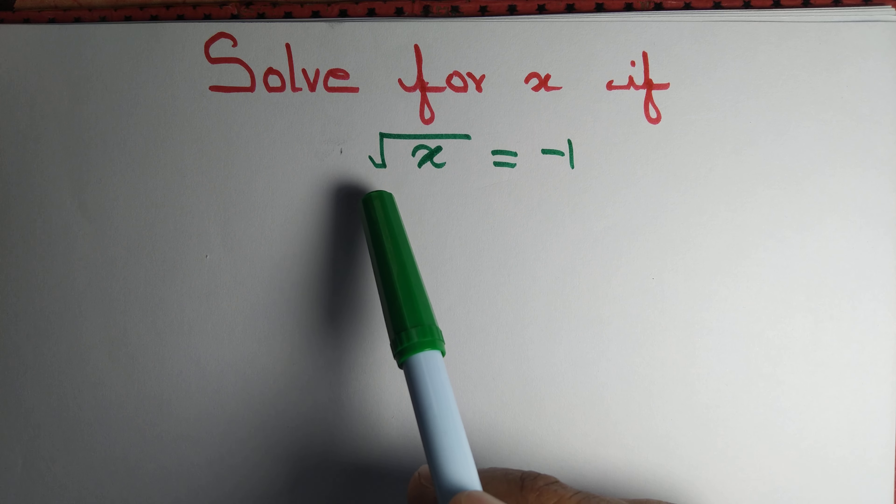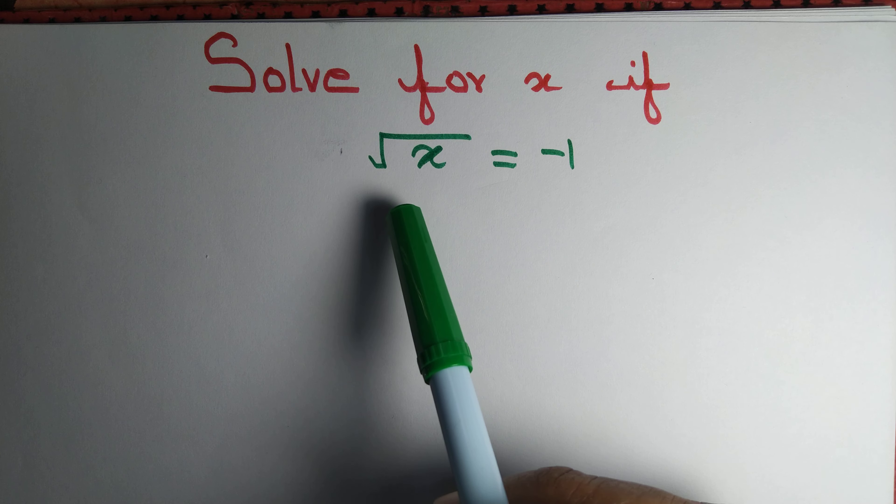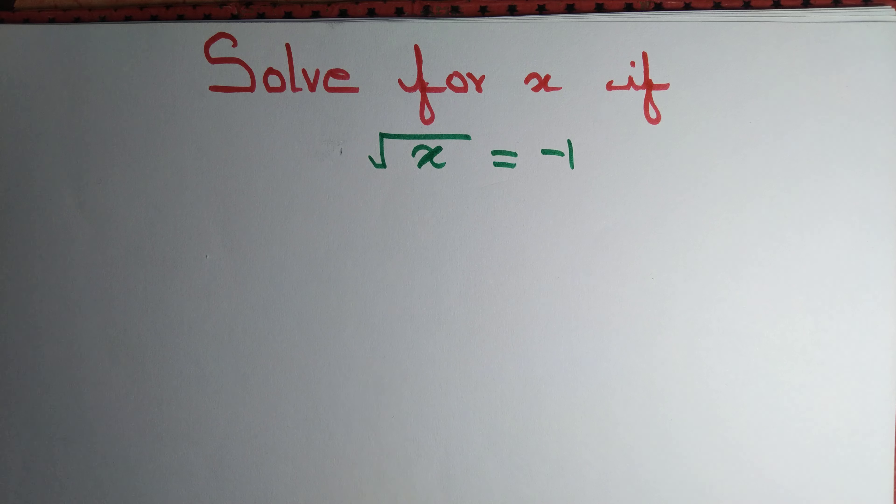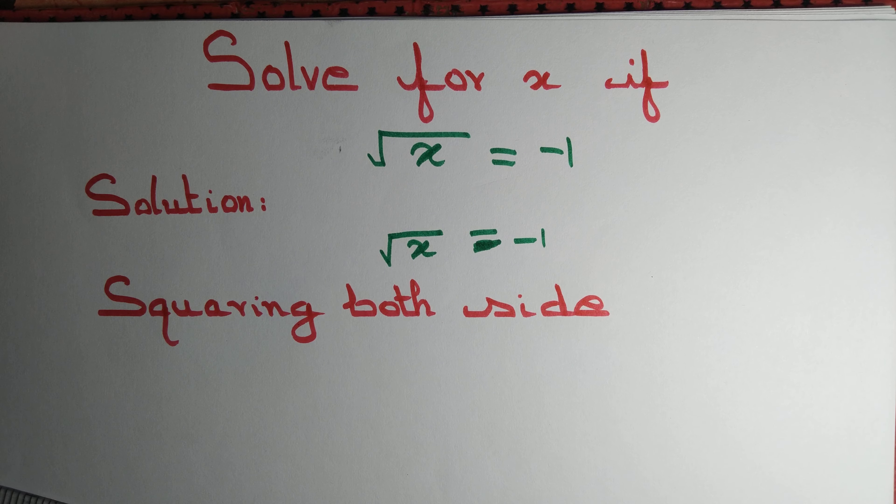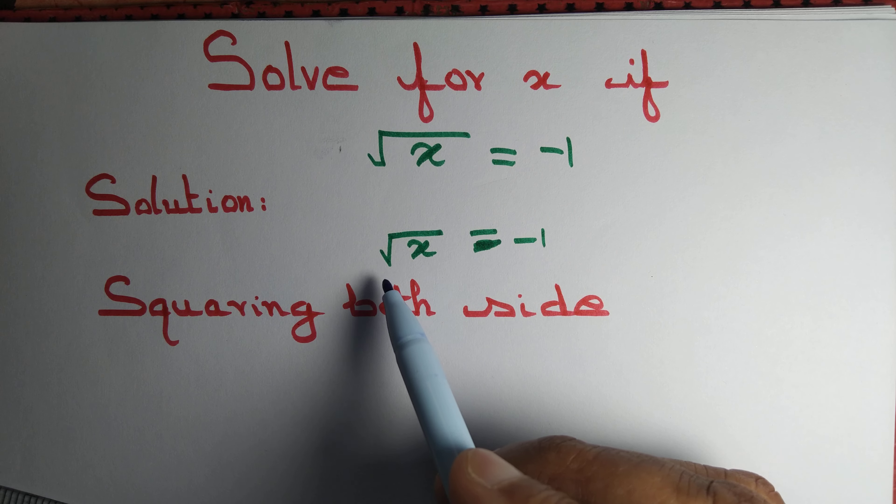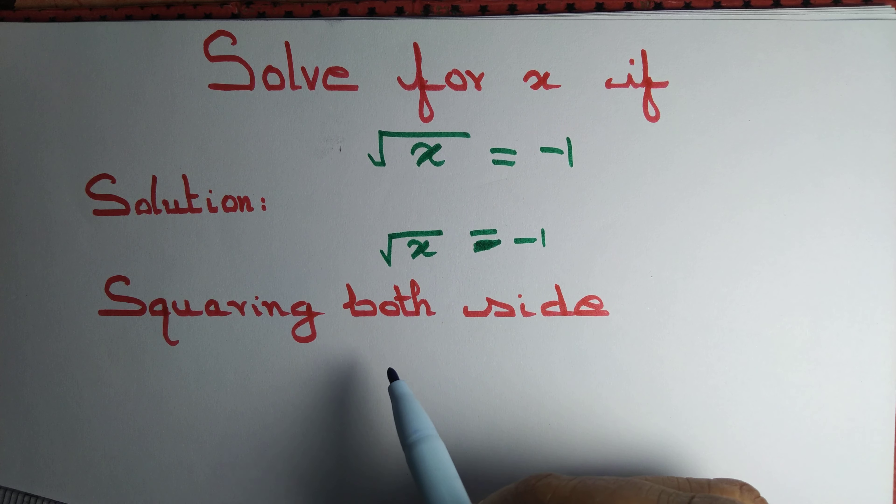Let us find all the real numbers x that satisfy the equation √x = -1. We are given the equation √x = -1.